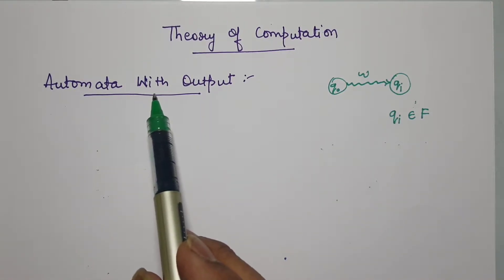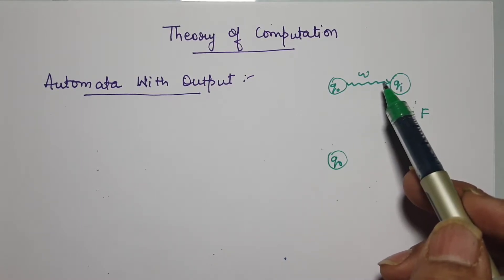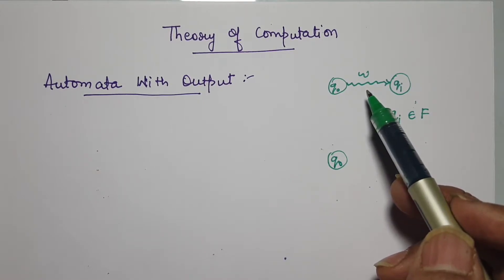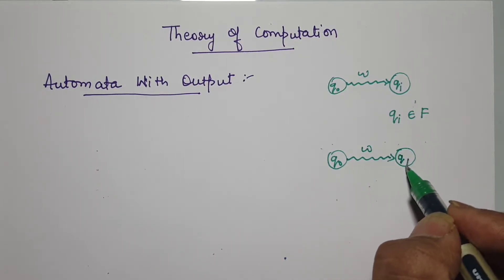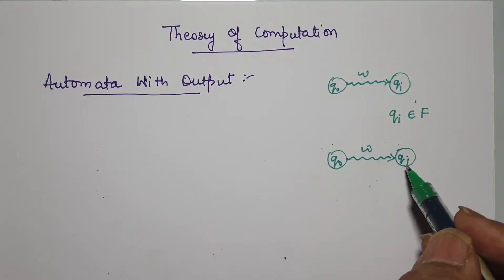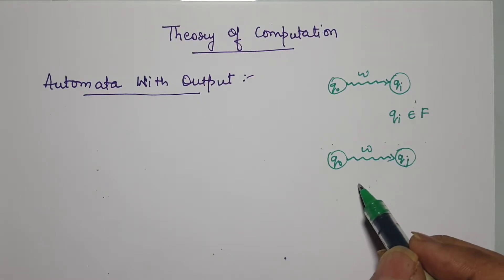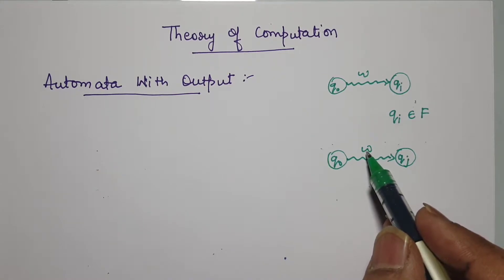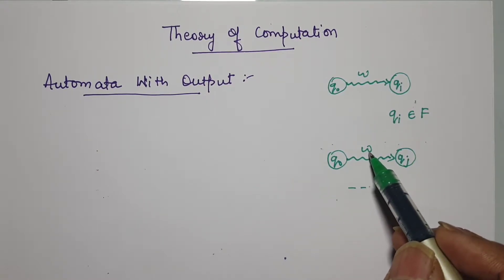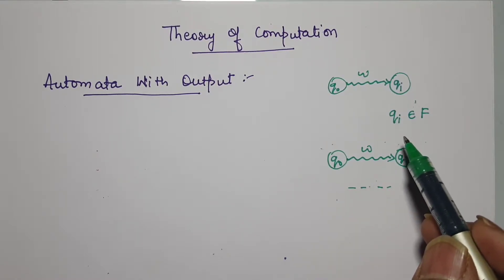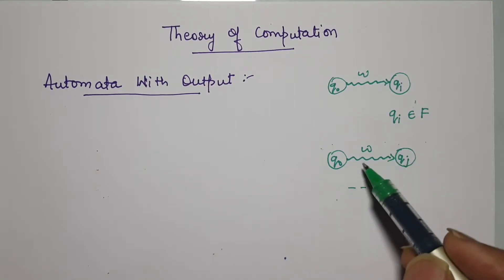We are going to see a finite automata with output. Here you have a starting state Q0, just like your deterministic finite automata or an NFA — non-deterministic finite automata. But here, given a word W, it will go to some state QJ. For each letter, each alphabet belonging to this word, there will be an output defined in this automata. For each alphabet that belongs to the input alphabet set and using which the word is formed, we have this output that is given by this automata.